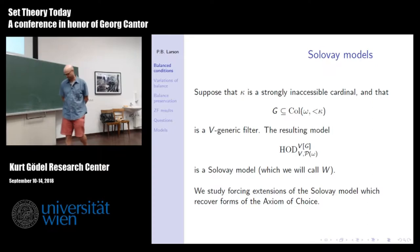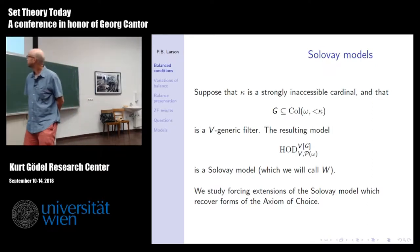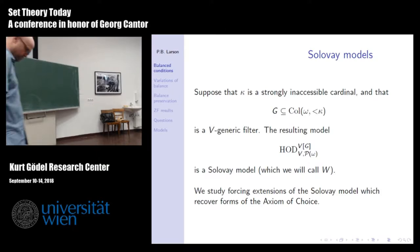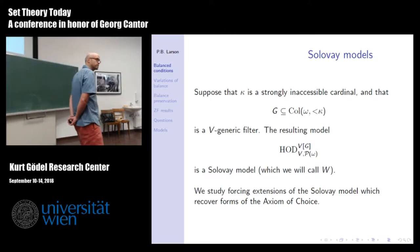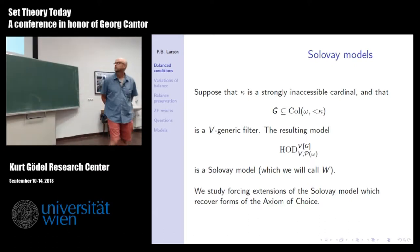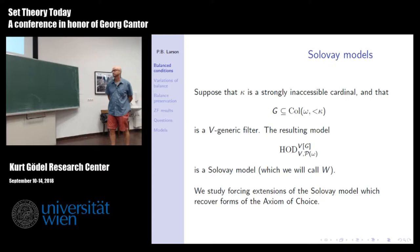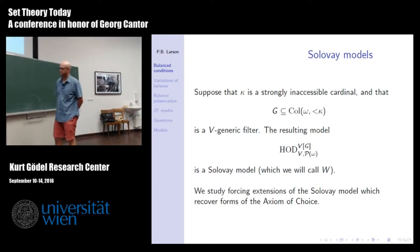We're going to study forcing extensions of this model which recover forms of the axiom of choice. Yindra and I have a paper from the JSL in 2017 in which we separate various forms of the axiom of choice. In that paper we work in the context of a proper class of Woodin cardinals. Some of this material is that paper just adapted to the Solovey model. It turned out to be very fruitful to reduce the large cardinal hypothesis.